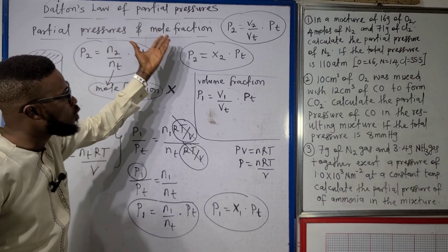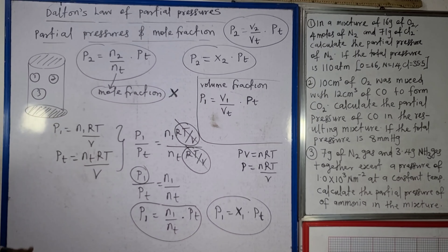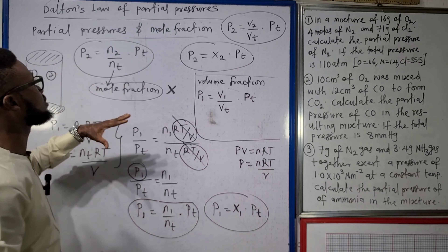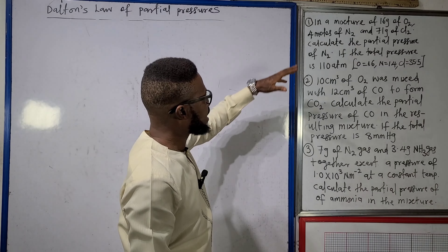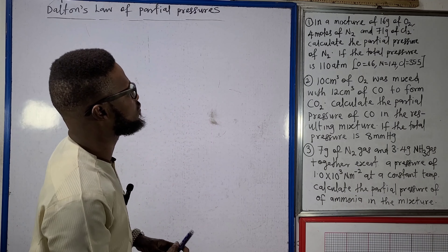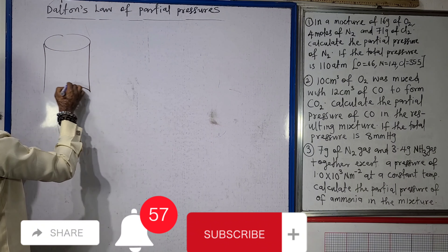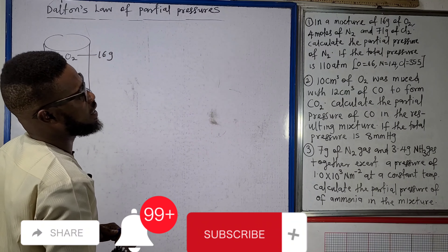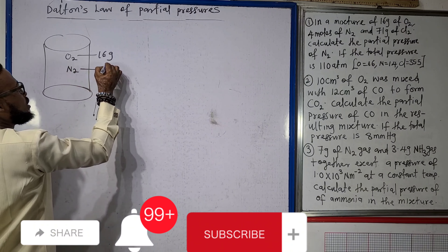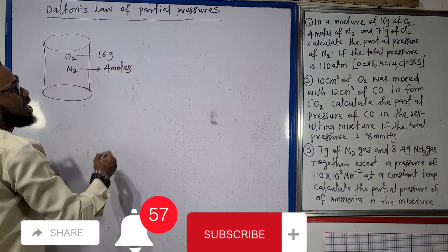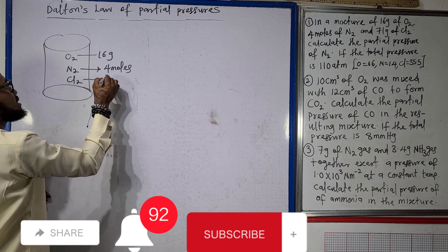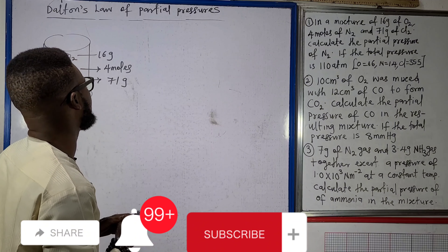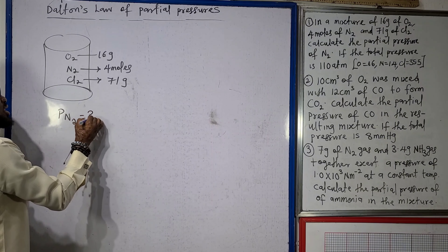That is what partial pressure, mole fraction, and volume fraction are all about. Now let's take questions relating to Dalton's Law of Partial Pressures. In the first question: in a mixture of 16 grams of oxygen, 4 moles of nitrogen, and 71 grams of chlorine gas, we are given the total pressure and asked to find the partial pressure of nitrogen when the total pressure is 110 atmospheres.